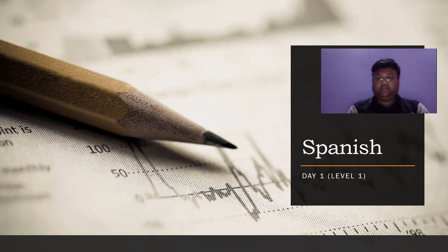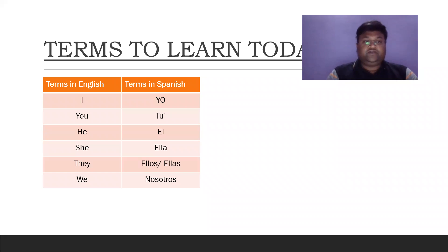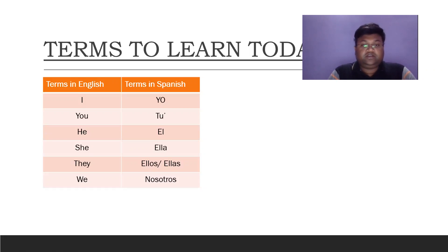Welcome. Today we will discuss Spanish language basic concepts. First, we understand what terms we will learn today. First is 'I' — in English we say 'I', in Spanish we say 'yo'. 'You' — in Hindi-like terms, 'he' is called 'él', 'she' is 'ella', and 'we' is 'nosotros'.